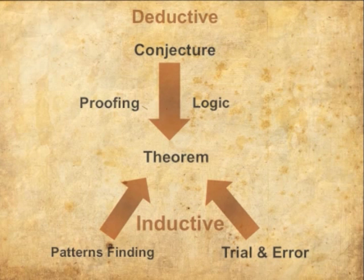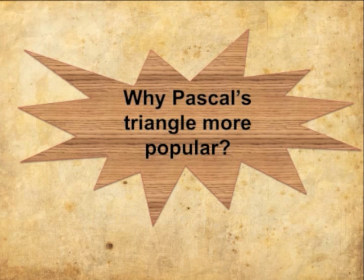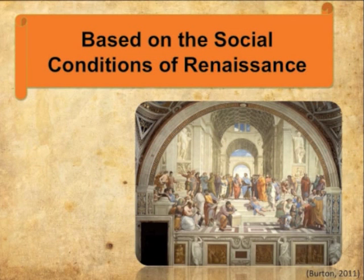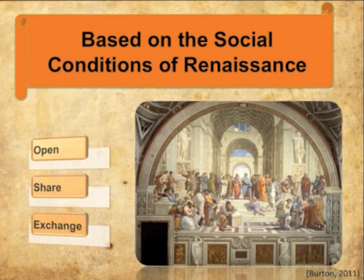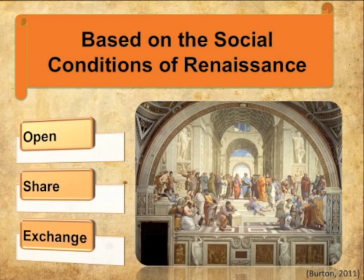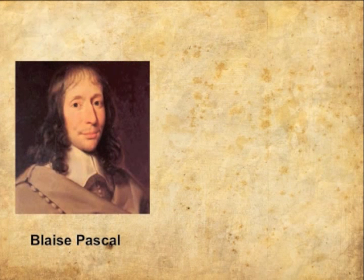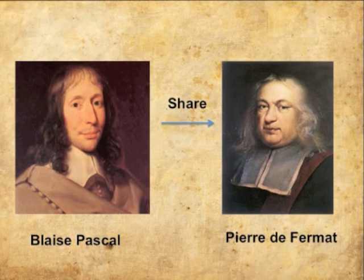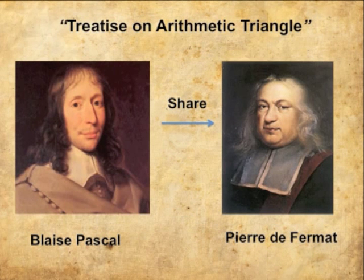Why did Pascal's triangle become more popular? There are some reasons about the development of Pascal's triangle. First, based on the social condition of the Renaissance in Europe, the thinking of society was very open to knowledge and information. They also shared and exchanged ideas with each other. For example, Pascal shared his paper with other famous mathematicians such as Pierre de Fermat. Fermat received his copy before September of 1654 about Pascal's Traité du Triangle Arithmétique, or in English, Treatise on the Arithmetic Triangle. So it had been recorded and documented to be explored better.